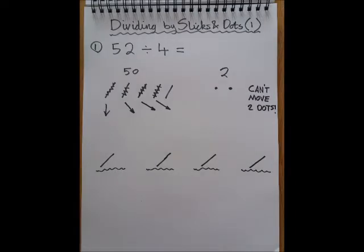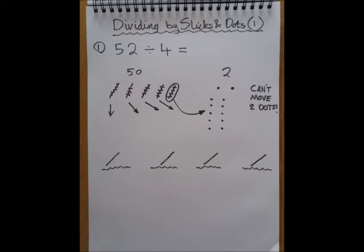Now we have a problem because really we'd want to take away four dots at a time but we can't because there's only two. But that's okay because we've got one stick left. So what we do is we cross off that stick and we replace it with 10 dots.